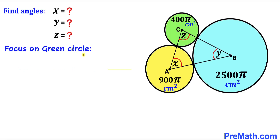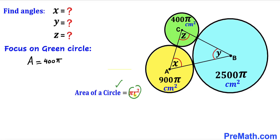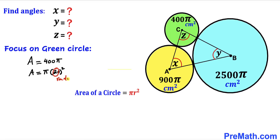Let's focus on the green circle whose area is 400π. Using the area formula πr², we can write 400π = π × 20², so 400 = 20². Therefore the radius r1 of the green circle is 20 centimeters.